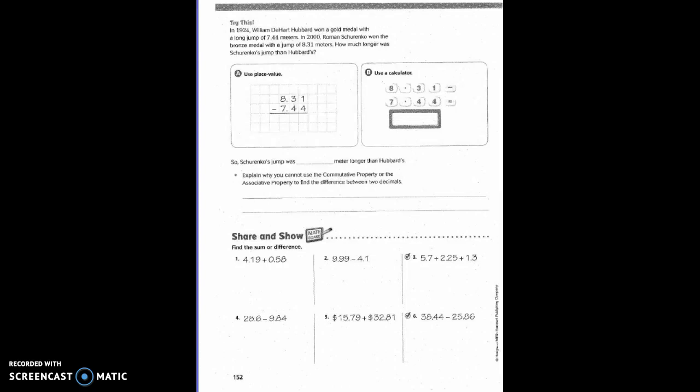We take 4 from 1. No. So this becomes a 11. The 3 becomes a 2. Can I take 4 from 2? No. So that becomes a 12, and this becomes a 7. 11 minus 4 is 7. 12 minus 4 is 8. 7 minus 7 is 0. So 0.87.